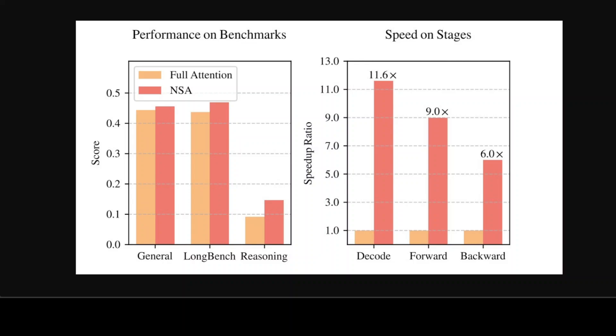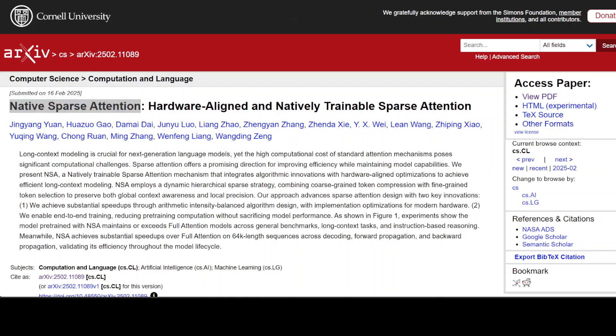The speed-up is evident in all stages: decoding, forward propagation, and backward propagation — pretty cool. I'm more than sure that not only existing DeepSeek models are using it, but various future models are going to start using Native Sparse Attention, because I believe this is the secret sauce behind DeepSeek R1 and all of these reasoning models.